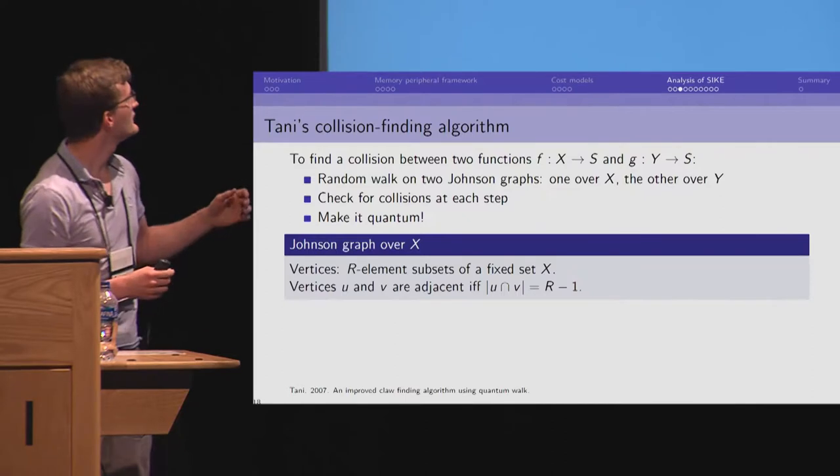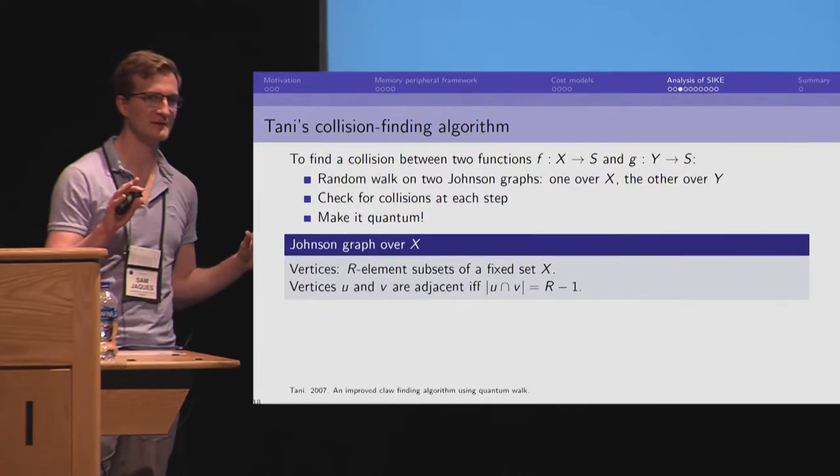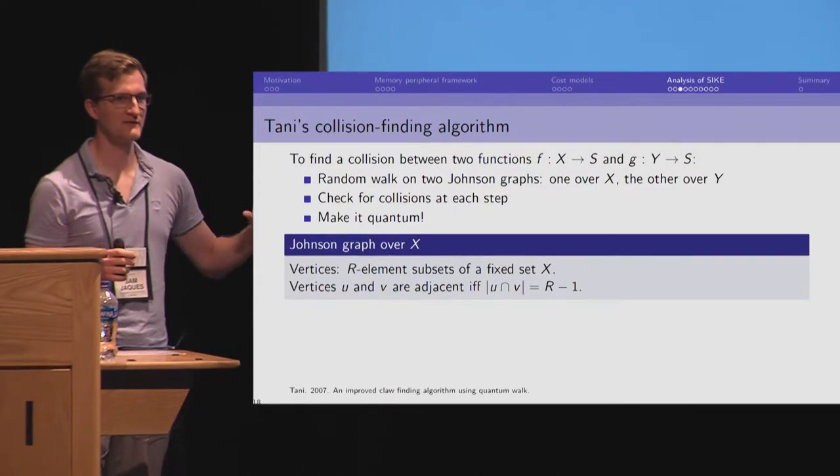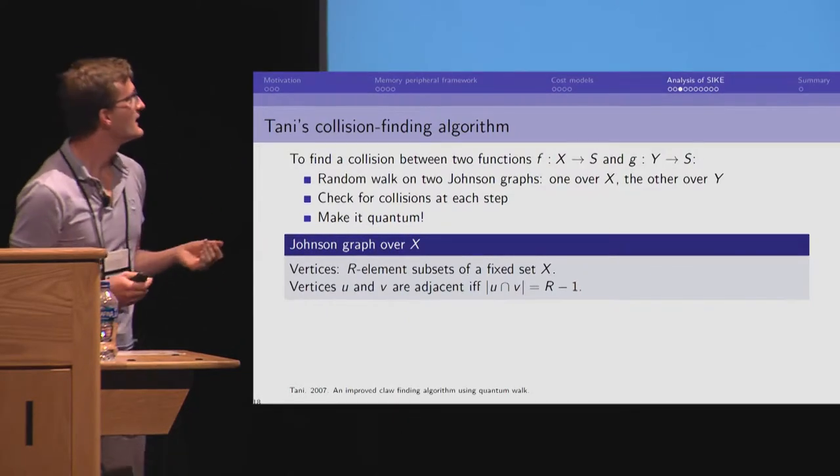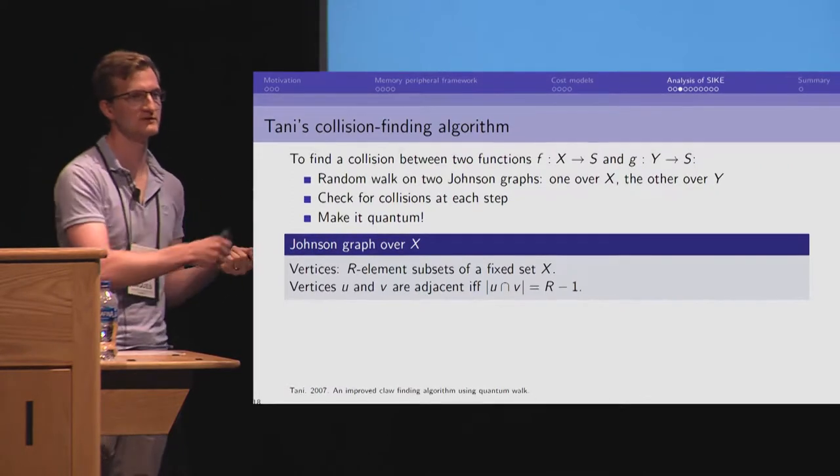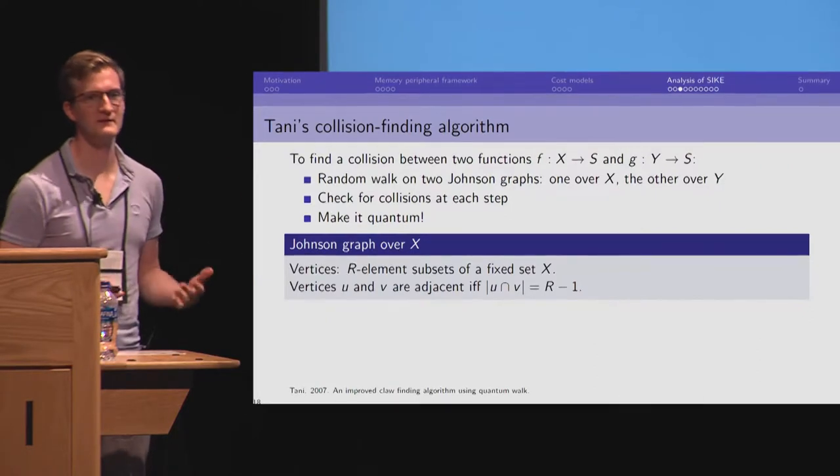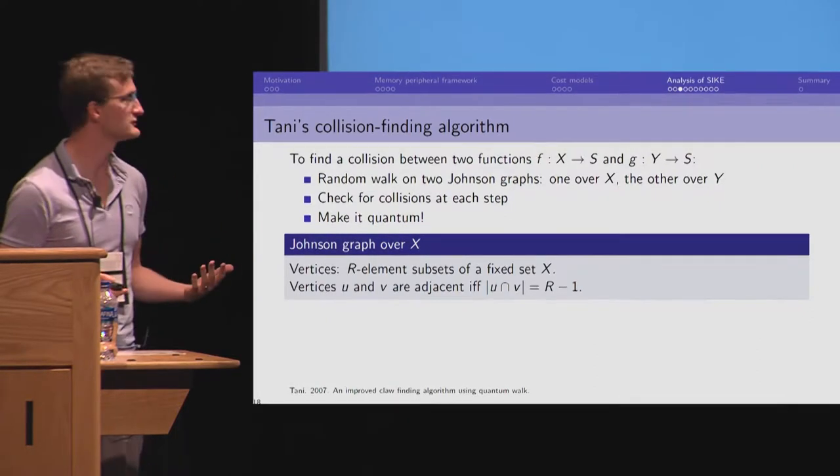So, for Tani's algorithm, you make one Johnson graph out of the set of paths going forward from the public parameter and another Johnson graph out of the paths going backwards. You take a random walk on both. And every time you insert a new element, you look for a collision in the other set. And you take this whole thing and you make it quantum with a standard construction very similar to Grover's algorithm.